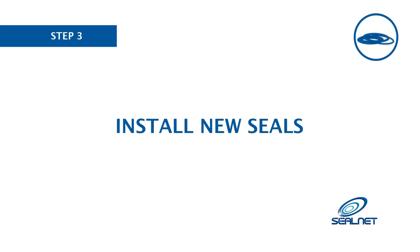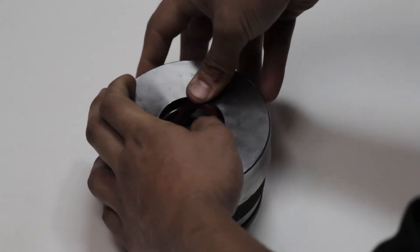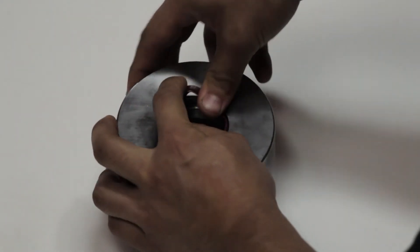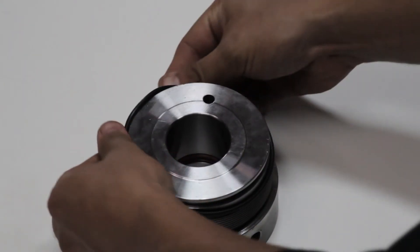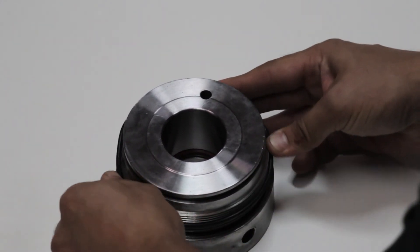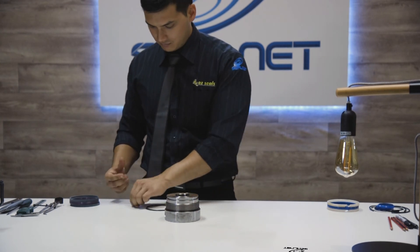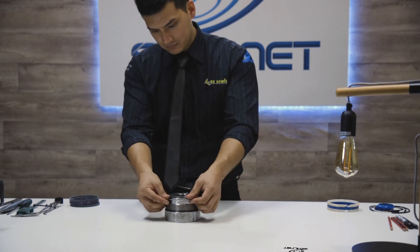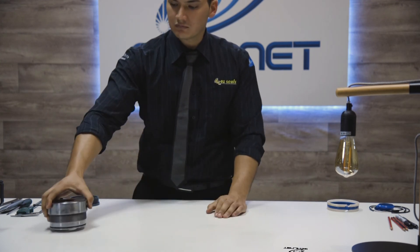Before you commence installation of your new seals, inspect and clean your gland to ensure successful installation. To install your gland seals, simply push them into their respective grooves. Try not to damage the seals by applying excessive force when installing them. When installing the O-rings, try not to damage them on any sharp edges on the outside of the gland. Once you have completed installing your seals, inspect the gland before reassembling.